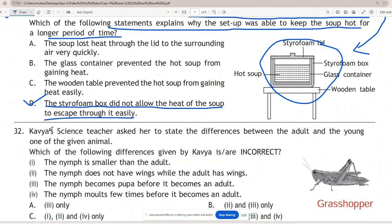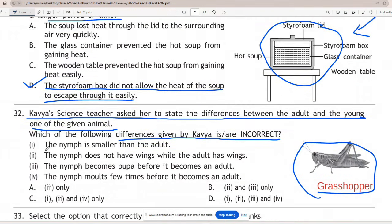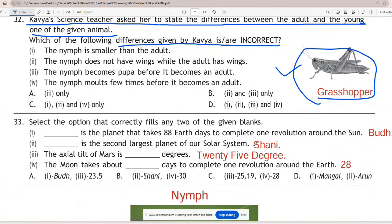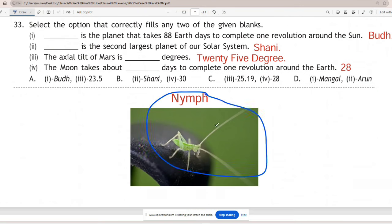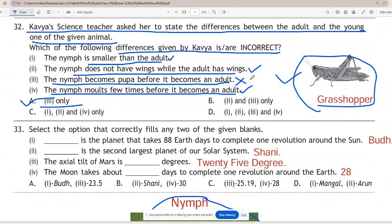Question 32: Kavya's science teacher asked her to state the differences between the adult and the young one of the given animal. Which of the following differences given by Kavya are incorrect? Grasshopper image is given and the baby of a grasshopper is called a nymph. Statement 1, the nymph is smaller than the adult is correct. Statement 2, the nymph does not have wings while the adult has wings is correct. Statement 3, the nymph becomes pupa before it becomes an adult is incorrect. Statement 4, the nymph molts few times before it becomes an adult is correct. So the answer is A - statement 3 is incorrect.